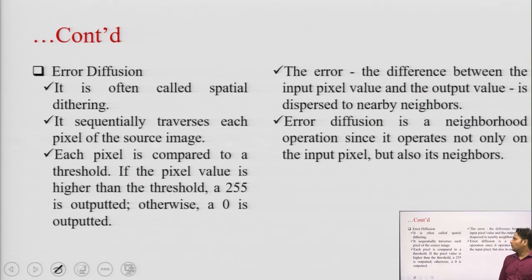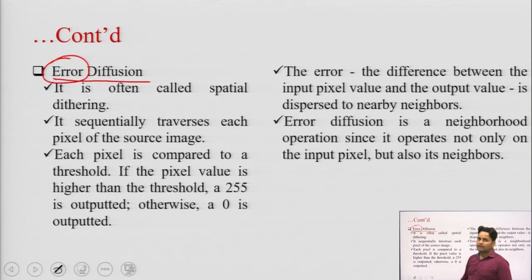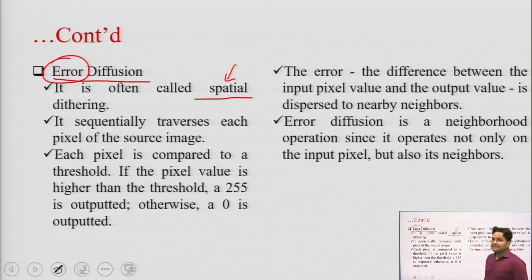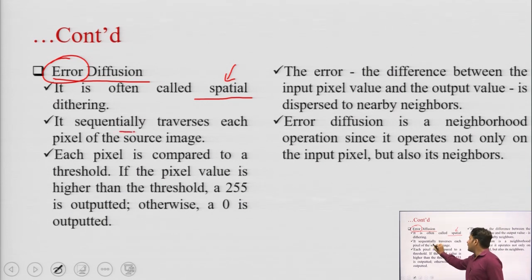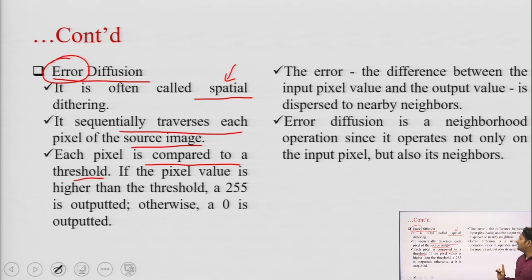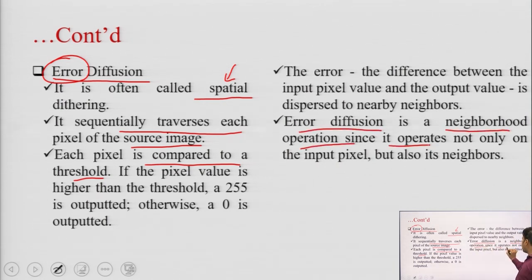Another method of digital halftoning is called error diffusion. In this method the error word is very important — you have to find the error between the spatial coordinates. Error diffusion is also known as spatial dithering, where neighboring pixels come into the picture. It sequentially traverses each pixel of the source image, and each pixel is compared to a threshold, same as dithering. However, error diffusion is a neighborhood operation since it operates not only on the input pixel but also on its neighbors.